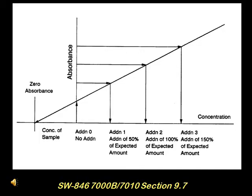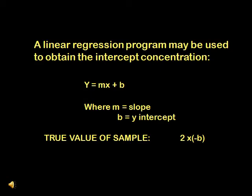This is the MSA plot from the SW846 manual, which shows the elevated slope and at the x-intercept is the concentration of the sample, which will be a negative number at half of the actual sample concentration. A linear regression program may be used to obtain the intercept concentration: y = mx + b, where m equals the slope and b equals the y-intercept. The true value is actually 2 times the absolute value of negative b.